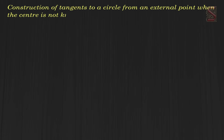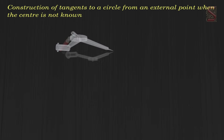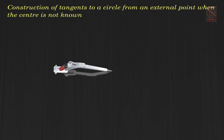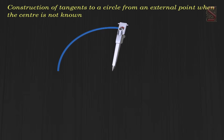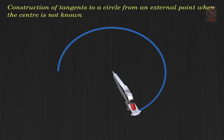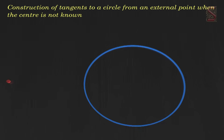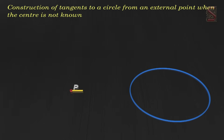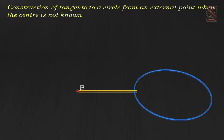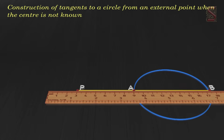Construction of tangents to a circle from an external point when the center is not known. Step 1: Let P be an external point from where the tangents are to be drawn to the given circle. Step 2: Through P draw a secant PAB to intersect the circle at A and B.